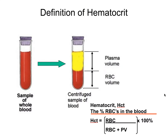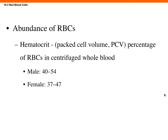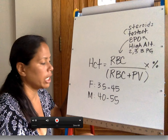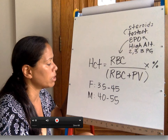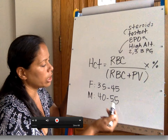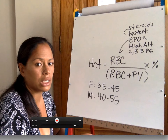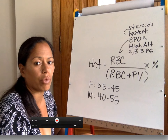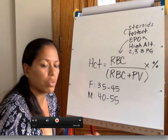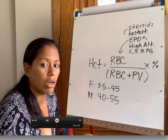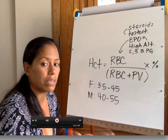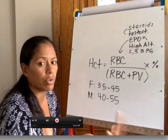For hematocrit ranges: males are estimated at about 40 to 55%, females about 35 to 45-50%. It's only about a 5 to 10% difference. If a female injected steroids, her hematocrit would go up, giving her an advantage in athletic competition. More red blood cells means more oxygen transported to tissues, so you can last longer in a sporting event like a marathon.